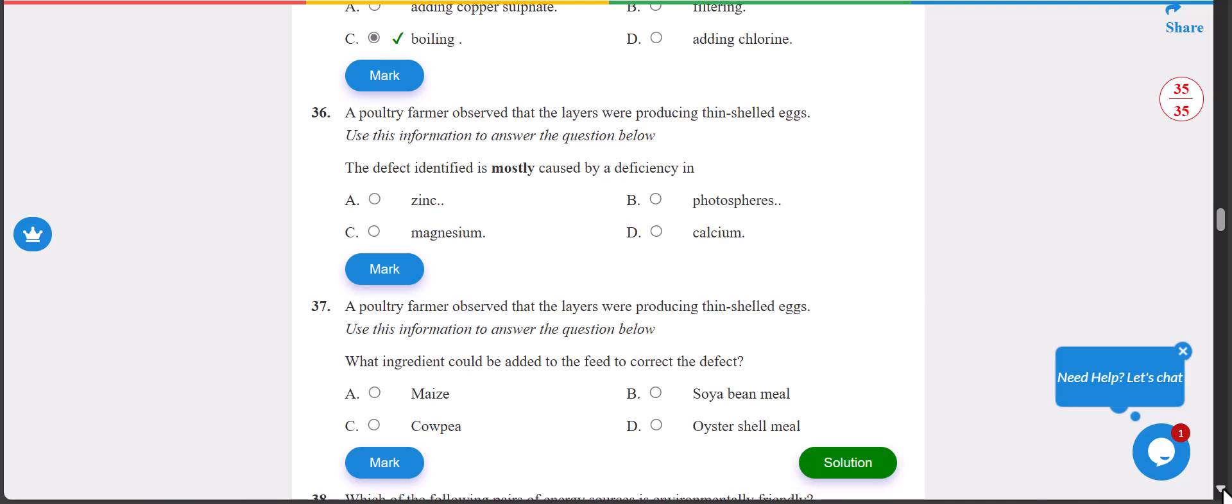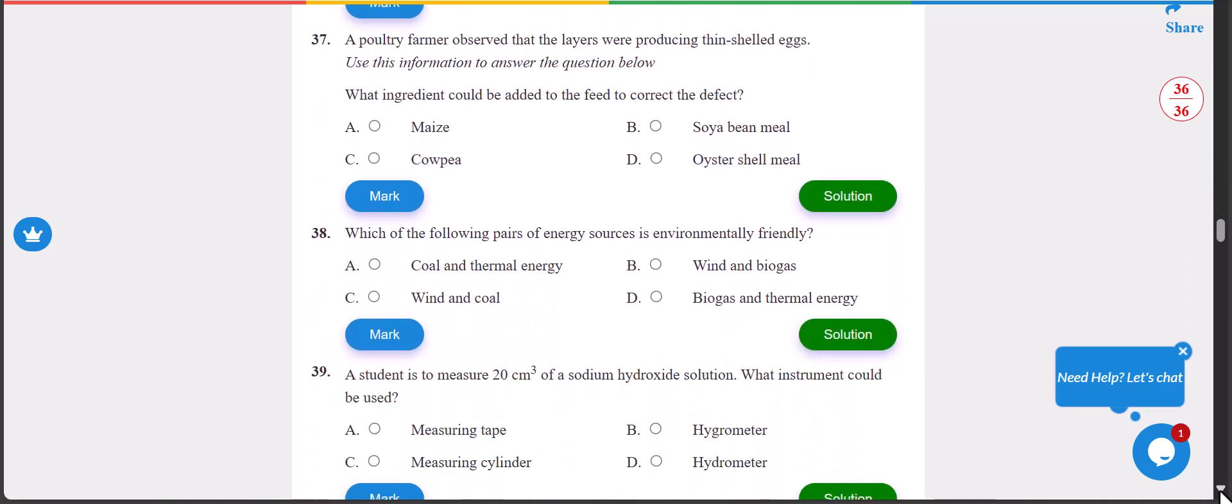Number 36: a poultry farmer observed that the layers were producing thin-shelled eggs. Use information to answer the question below. The defect identified is mostly caused by the deficiency of calcium. When there is lack of calcium obviously it will lead to that. That's the correct answer.